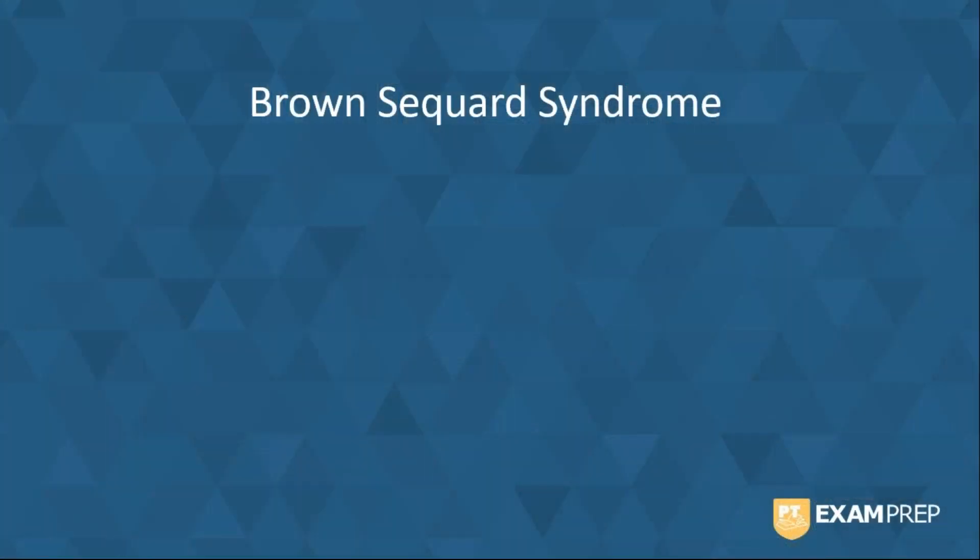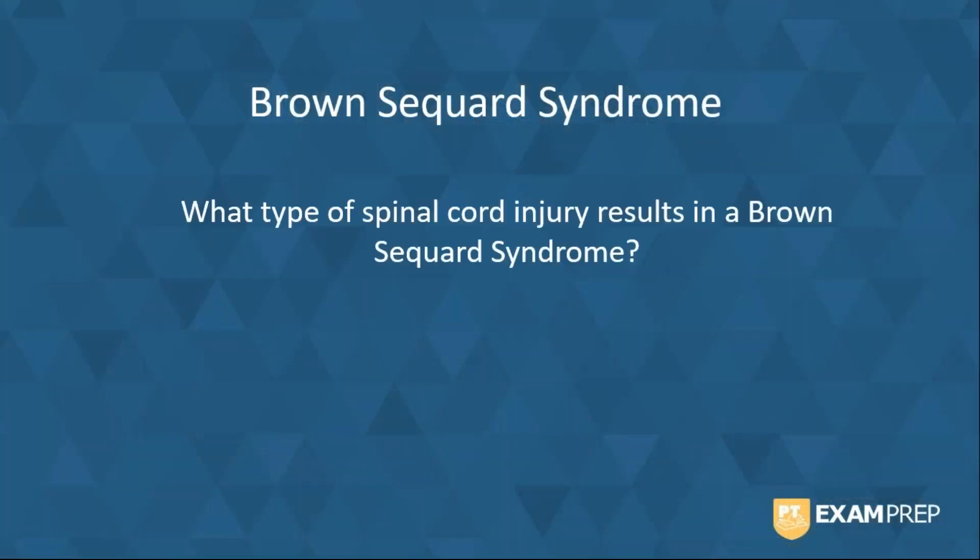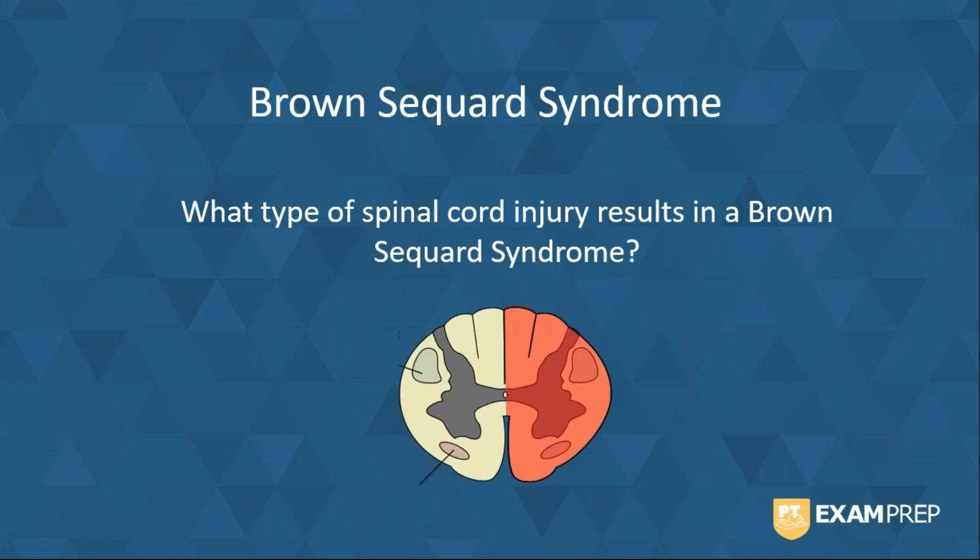To get you thinking, let's start with a question. What type of spinal cord injury results in Brown-Séquard syndrome? Think you know the answer? Well, Brown-Séquard syndrome results from damage to one side of the spinal cord, for example a penetrating knife wound. The image here demonstrates unilateral spinal cord damage with the red depicting injury to one side of the cord.